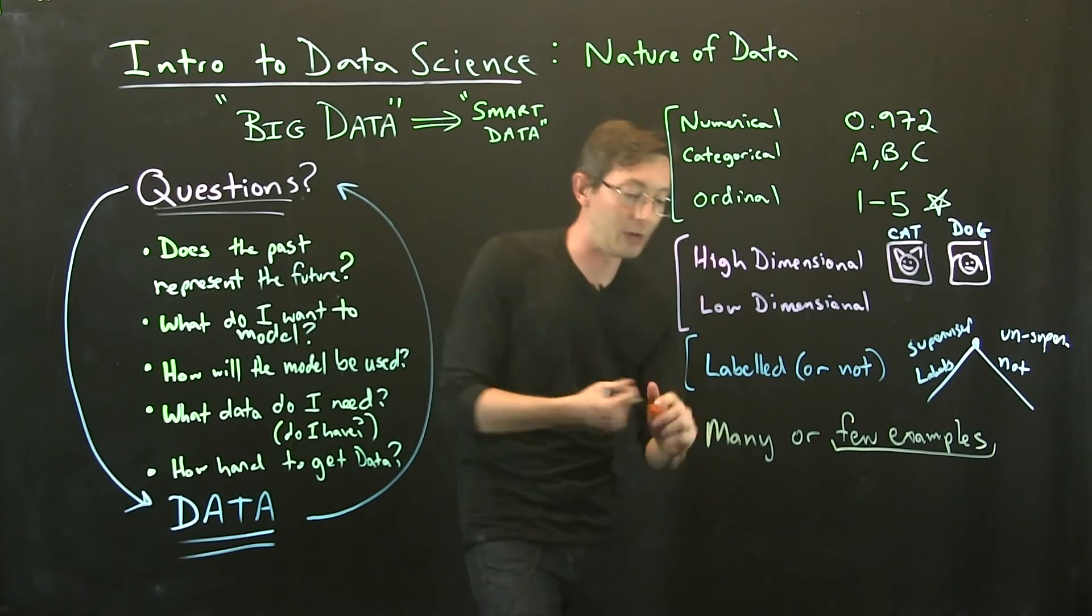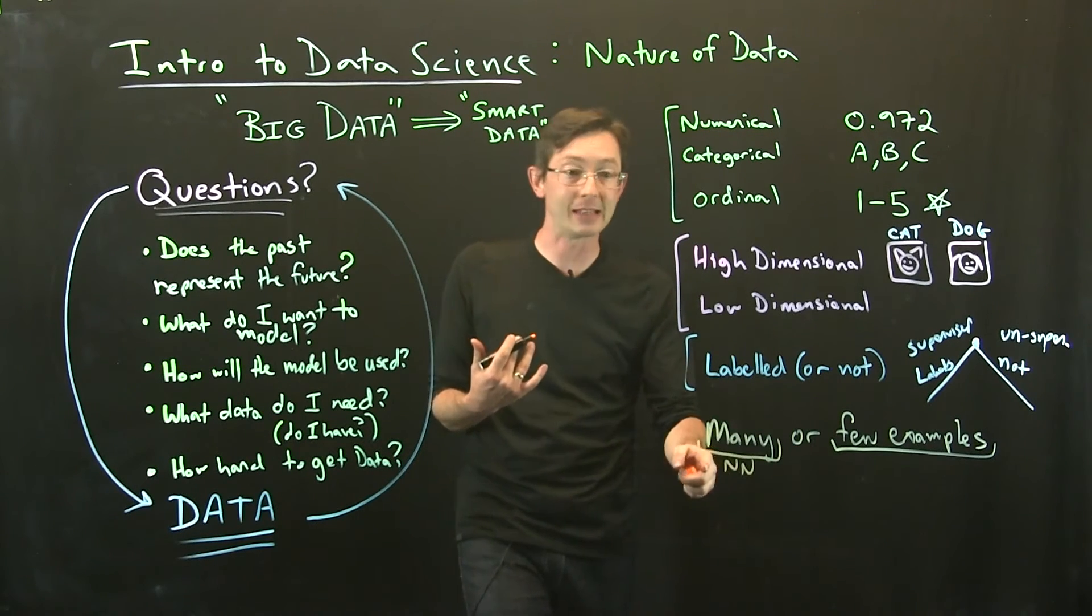The intersection of many or few and high or low dimensional creates really interesting categories of problems. Neural networks work really well when you have many examples of labeled data, not so great for few example data.